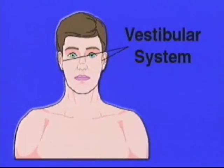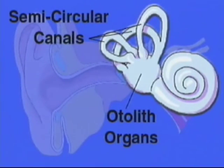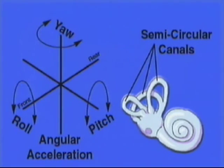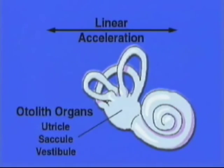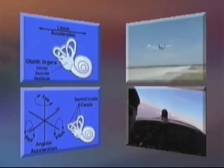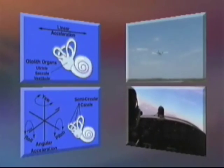The vestibular system is located in the inner ear. This system is the size of a pencil eraser and contains two distinct structures: the semicircular canals and the otolith organs. The semicircular canals detect changes in angular acceleration, while the otolith organs detect changes in linear acceleration. Both provide information regarding your body's position and movement relative to Earth.